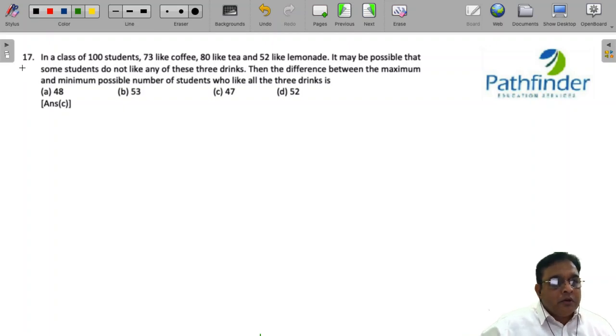CAT 22, slot 1, quantitative aptitude, question number 17. In a class of 100 students, 73 like coffee, 80 like tea, and 52 like lemonade. It may be possible that some students do not like any of these three drinks. Then the difference between the maximum and minimum possible number of students who like all the three drinks.